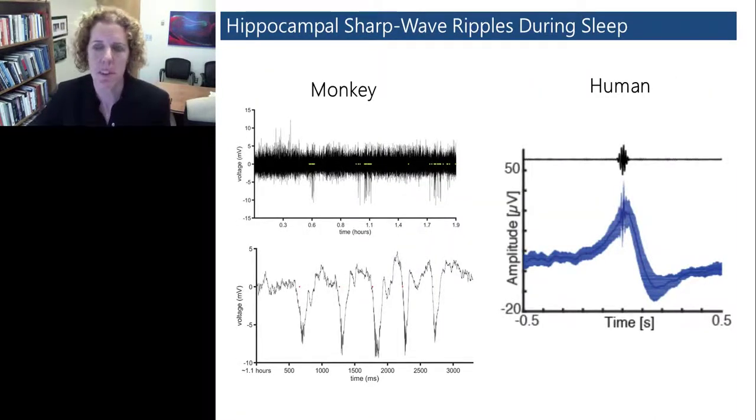In terms of how the hippocampus and the prefrontal cortex might work together in support of memory formation and schema development, one hypothesis is that this interaction may be coordinated through fast oscillations. These are sharp wave ripples that are at about 120 hertz. These sharp wave ripples have been implicated in previous studies in learning and memory across species. We've been able to identify sharp wave ripples as shown here in both monkeys and humans during periods of sleep.